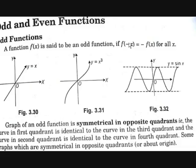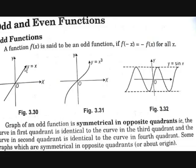If f of minus x is equal to minus f of x, the function is called an odd function. f of minus x means the values of x in the negative x direction. As you can see in these pictures, from the origin to the left-hand side, f of minus x is opposite to f of x — if f of x is in the positive y-axis, f of minus x will be in the negative y-axis. So all values in the negative x direction are opposite to f of x, and the graph forms mirror images in opposite quadrants.